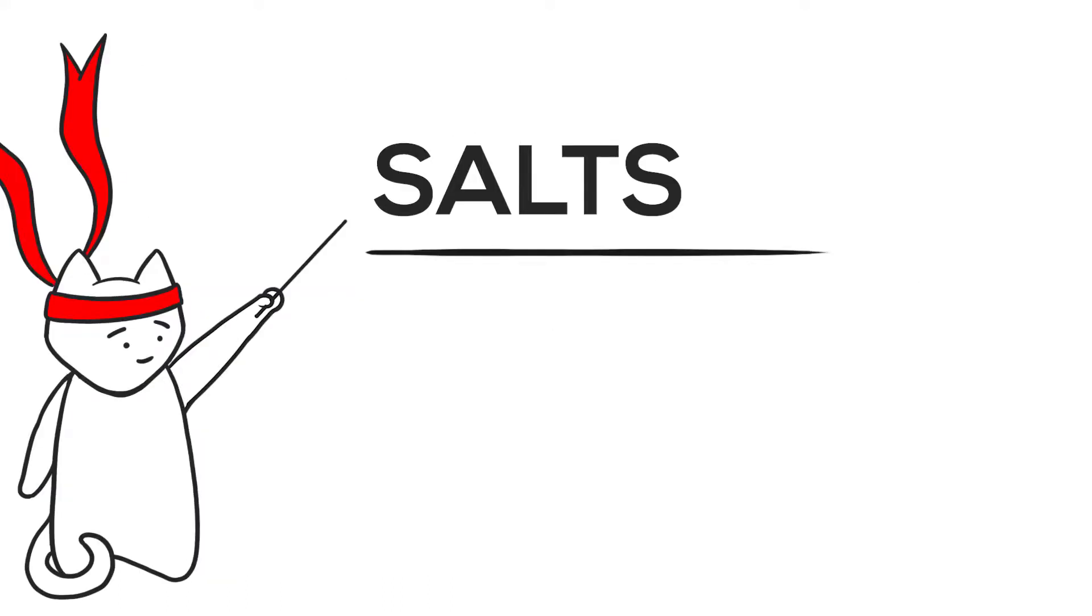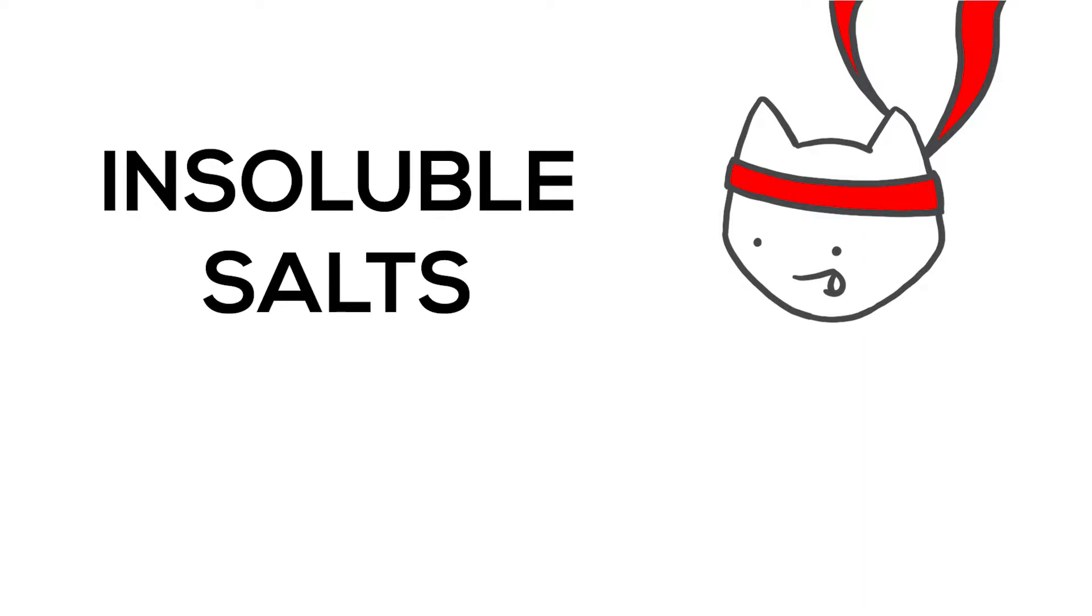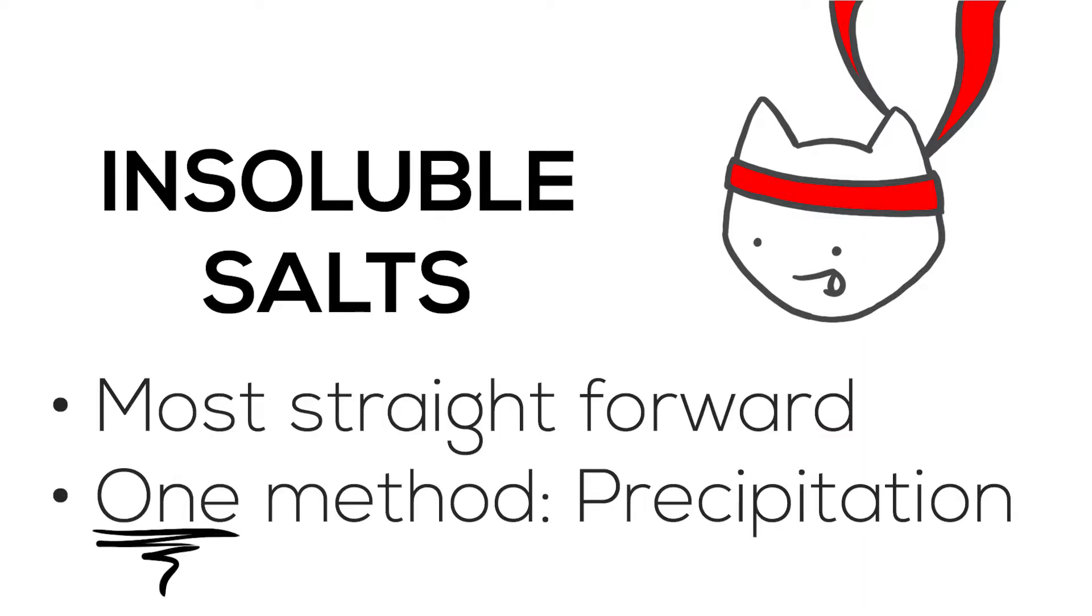Salts can be categorized into two different types, soluble or insoluble. We will start the explanation with insoluble salts because it is the most straightforward where the only method to prepare insoluble salts is precipitation.